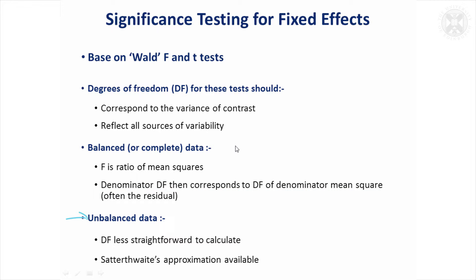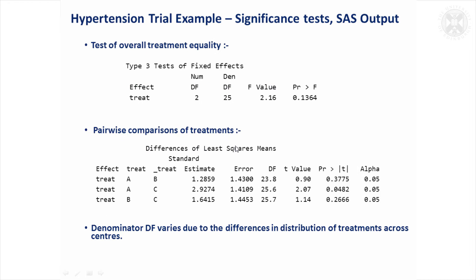But if you've got unbalanced data or some missing data, it's less straightforward. In fact, you can't really calculate the degrees of freedom by hand because it needs to reflect the different sources of variation. There is an approximation available due to someone called Satterthwaite — the approximation dates back to a publication in the 1950s, but it's still the main one used now.